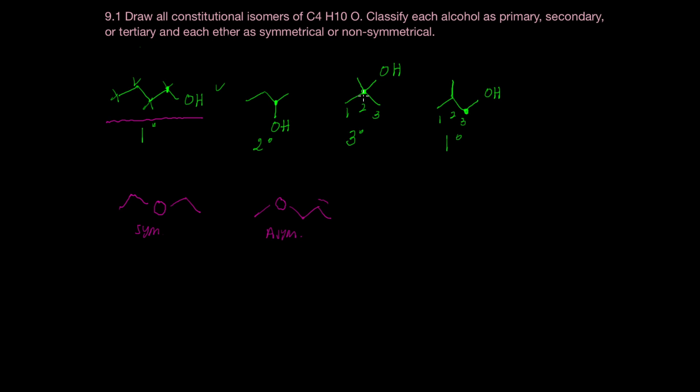Now, these three carbons, remember, they don't need to be just in a line. They can be a branch. So if we take a look at this portion here, a propyl is what I have drawn, but I could also have an isopropyl. So let me go ahead and do that here. So there's an isopropyl group. So that's another possibility.